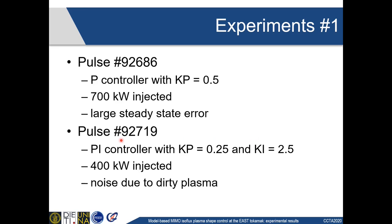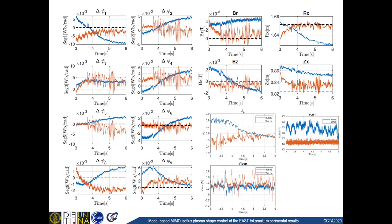This is indeed what can be seen in Pulse 92719, where the error approaches much smaller values at steady state for almost all of the controlled variables. In order to test the new controller, in this second case a smaller amount of power of about 400 kilowatts was injected into the plasma, resulting in a lower value of beta-P and a slightly higher average plasma voltage. The noisier behavior of the plasma in this case was probably due to impurities in the vacuum chamber. It is also worth mentioning that in all of these experiments the controlled variables for the X-point were the radial and vertical magnetic field components, Br and Bz.